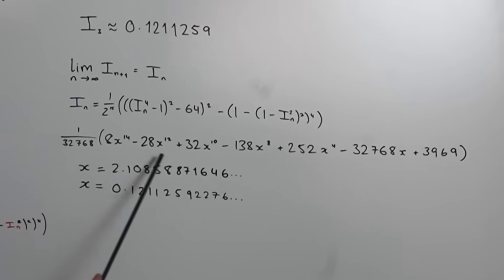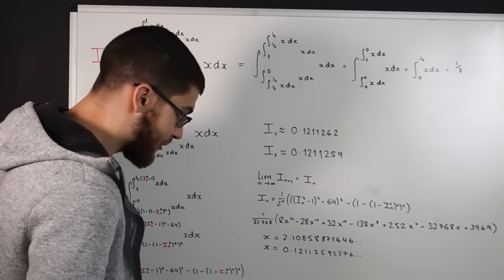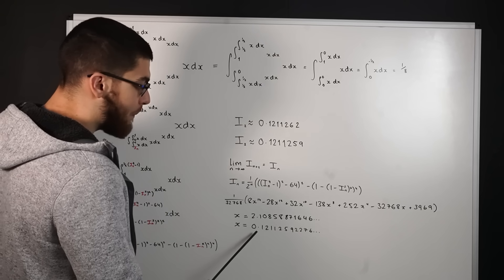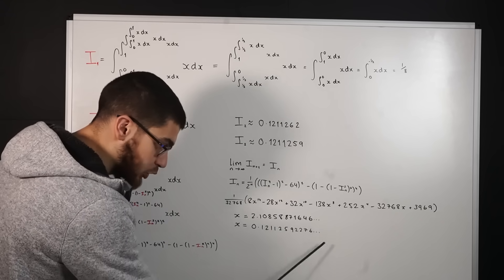So when we multiply out we get this great big long polynomial and there are two real solutions for this polynomial. x equals 2.108 and x equals 0.121 which is what we're looking for.